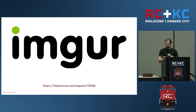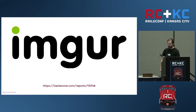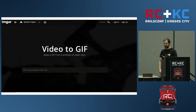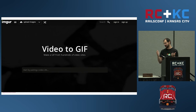Imgur — you upload photos, people look at them, comment, upvote, and so on. They have functionality where you can give them a URL to a video and then they convert it to a GIF. A researcher was looking at this and noticed how it works — it hits some endpoint, passes in a URL, and then goes and fetches that URL.